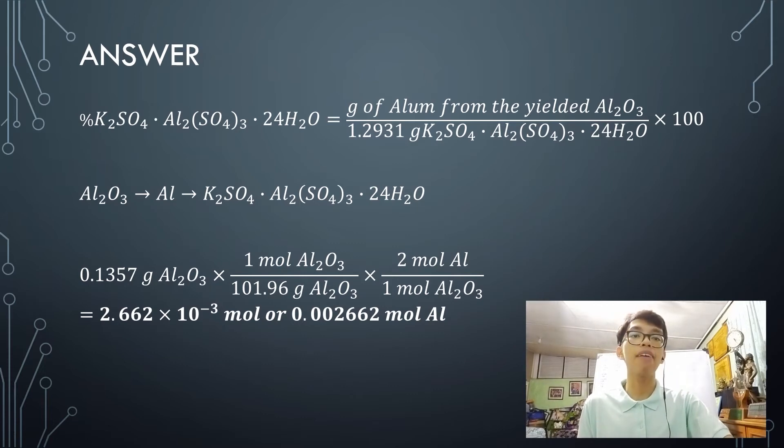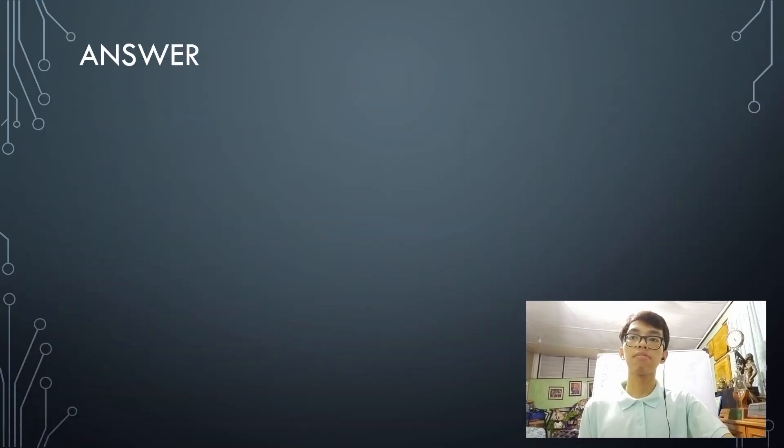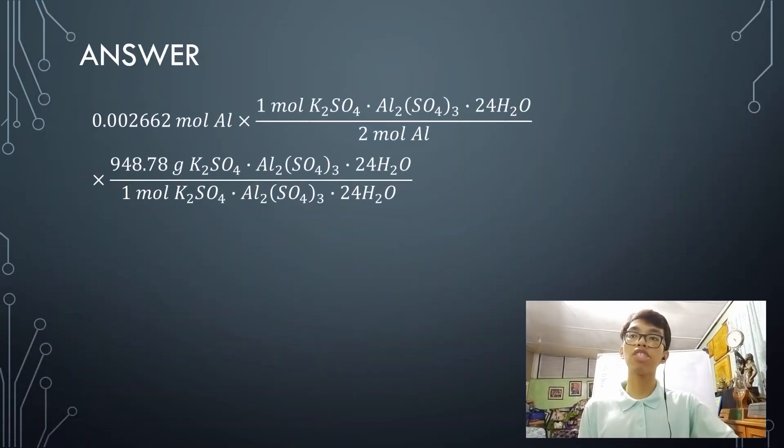Now, we have our moles of aluminum. From there, you're going to convert that into the alum. So you have here your 0.002662 moles of aluminum and multiply it by the stoichiometric ratio of alum and aluminum. Now, there is 1 mole of alum per 2 moles of aluminum.